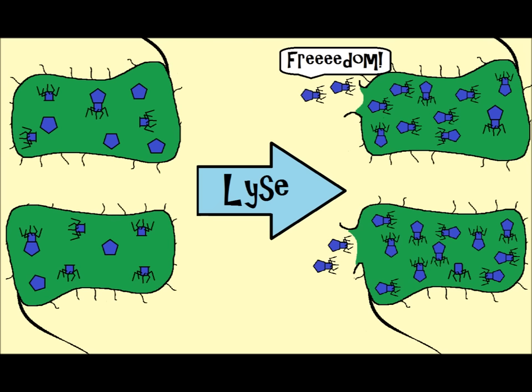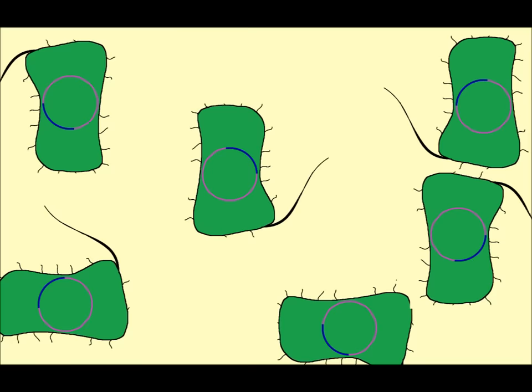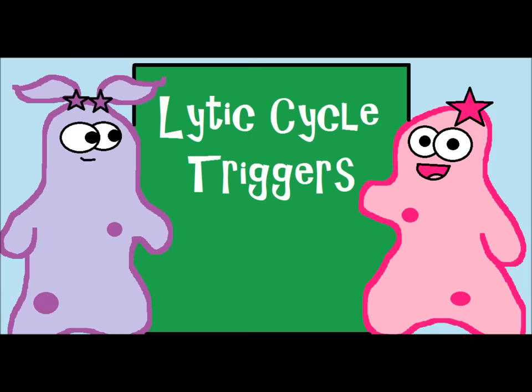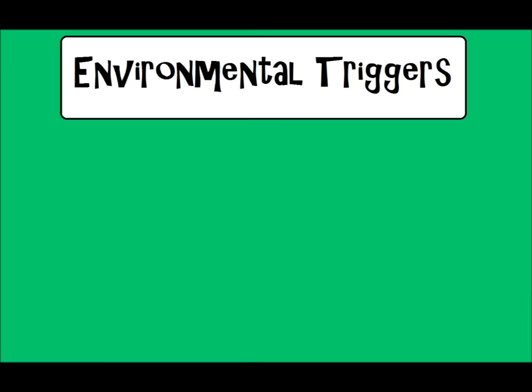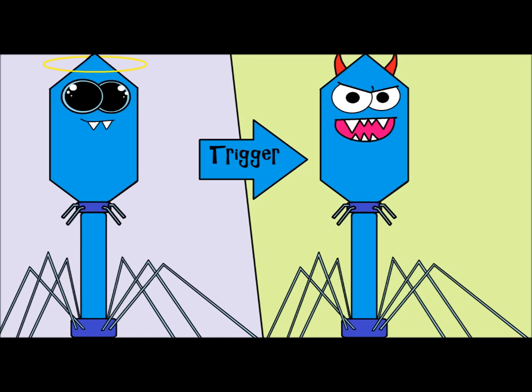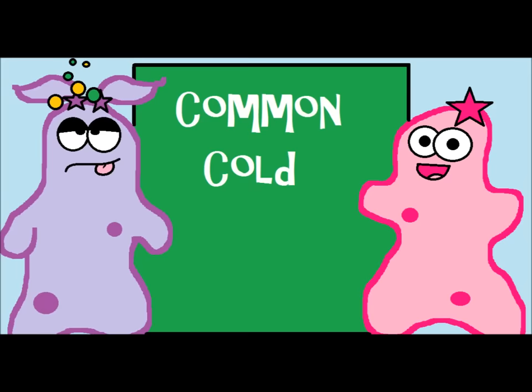In the meantime, during the lysogenic cycle, the viral DNA is just hidden in there — it's a sneaky type of thing. As for what triggers it to switch into the lytic cycle, it can be a variety of things and scientists are still researching this. Sometimes environmental triggers like UV radiation or chemical triggers can cause the virus to suddenly switch into the lytic cycle and come out.